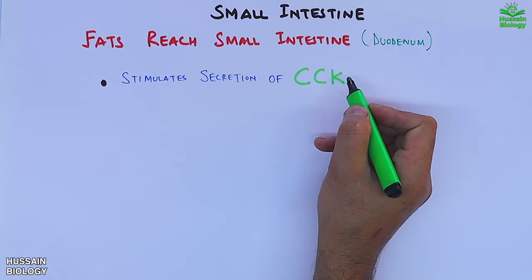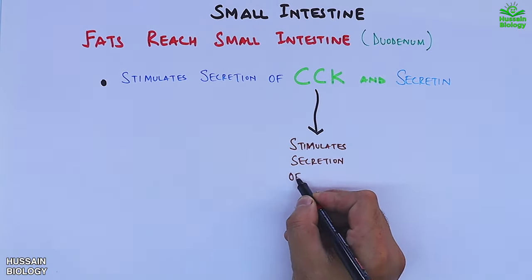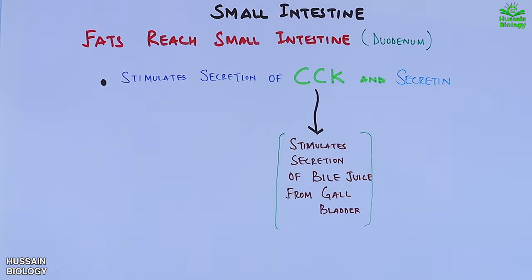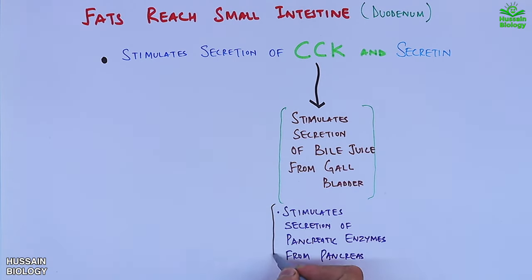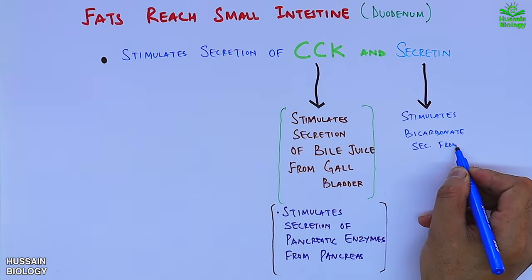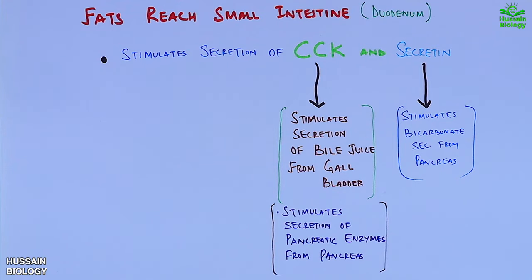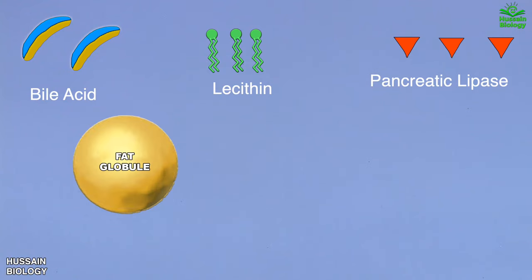After that, the fats reach the small intestine where the majority of fats are digested. Upon reaching the duodenum, these fats stimulate the secretion of CCK and secretin from I and S cells of the duodenum. CCK or cholecystokinin stimulates secretion of bile juice from the gallbladder and also stimulates secretion of pancreatic lipase from the pancreas. Secretin stimulates secretion of bicarbonate ions from the pancreas. Bile juice contains two important components: bile acid and lecithin.